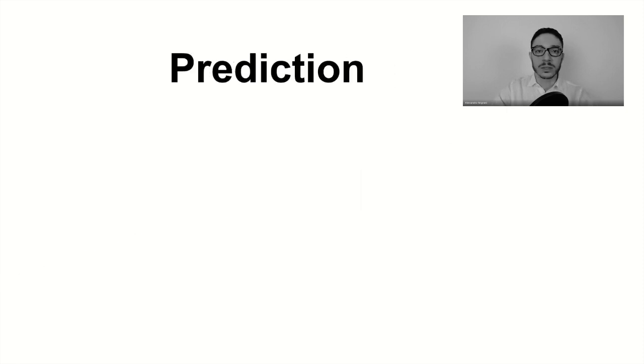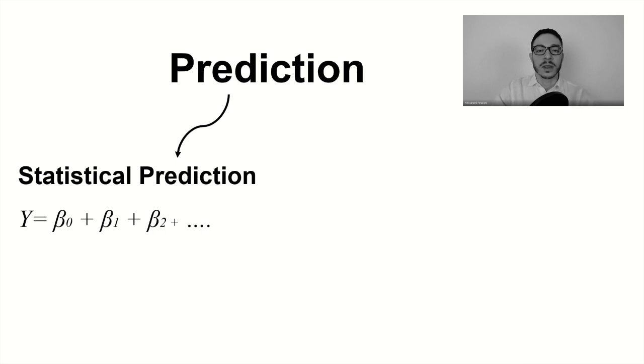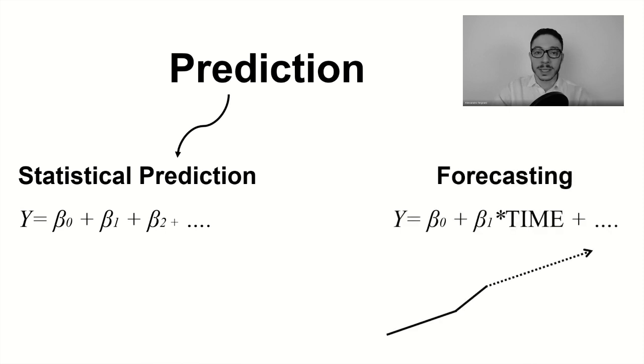Actually, there are two different meanings of the term prediction. The first meaning refers to statistical prediction, which is a term used in the social sciences to look at the outcome of one variable as a function of the behavior of other variables. If you think about it, this is very similar to forecasting. In fact, both things use statistical models - at the end of the day, it's just regressions.